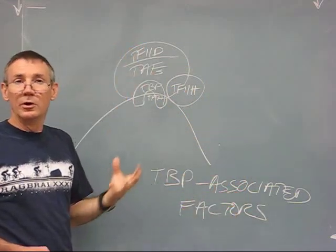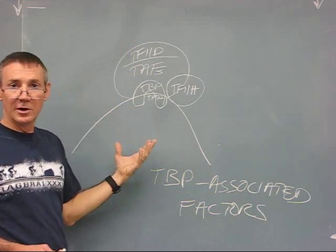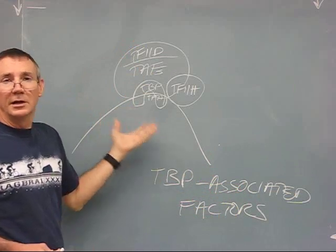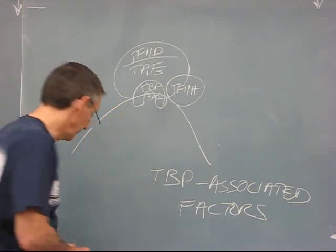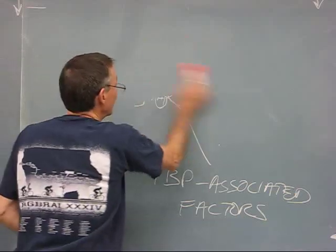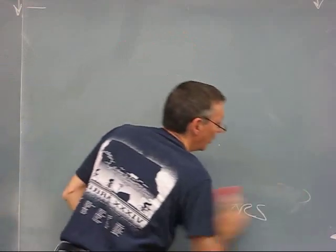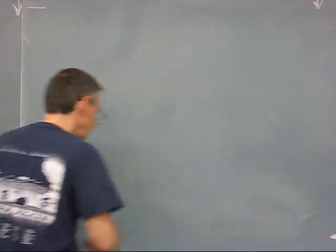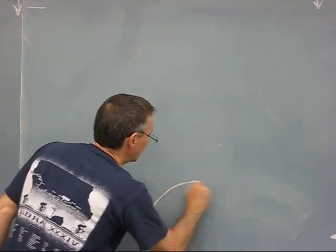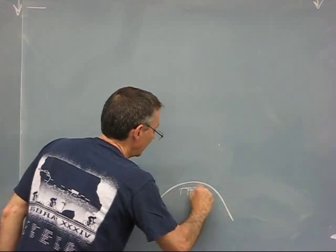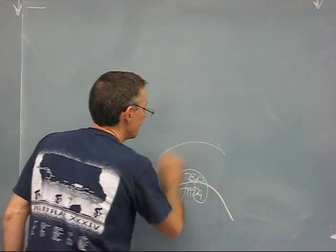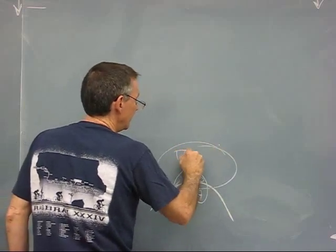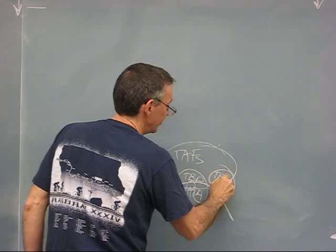Now, what can we do to increase the stability of this complex? Mainly, it has to be bound to the DNA at other places. The way that this works is by the action of activators. So let me move it down here. There's your TATA box, here's TBP, TAFs, TF2H.